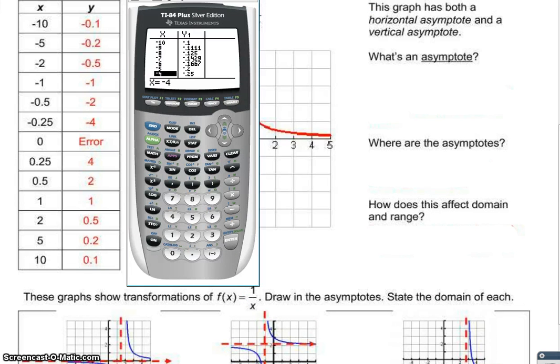Looking at my table, when x is -10, I have -0.1. When x is -5, I have -0.2, and so forth.